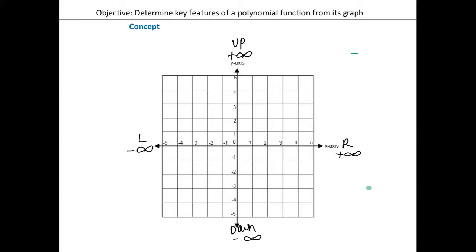If I had something pointing in this direction — just draw an arrow in here like this. Is that the right side or the left side? Right side. And is it pointing upwards or pointing downwards? Upwards, right? That's a right up. So then I'm going to write my end behavior. This is going to be as x approaches the right side — well, the right side is positive infinity. Then what are your y's doing? The y's are approaching upwards, and so upwards is positive infinity.